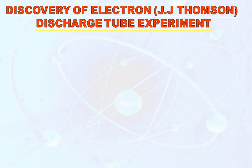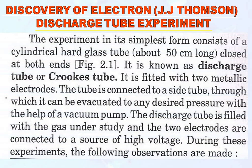Discovery of electron by J.J. Thomson — Discharge Tube Experiment. The experiment in its simplest form consists of a cylindrical hard glass tube closed at both ends, called a discharge tube or Crookes tube. It is fitted with two metallic electrodes. The tube is connected to a side through which it is evacuated to a desired pressure with the help of a vacuum pump.